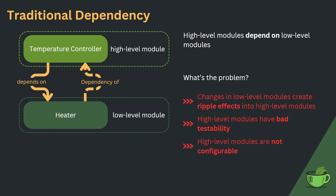The third major drawback of designing classes with a traditional dependency structure is that high-level modules are not configurable. The heater is a hard-coded dependency of the temperature controller. With this design, it's not possible to use a different heater, or a different device altogether like an AC. Making changes to the used heater would entail changes in the temperature controller class itself.